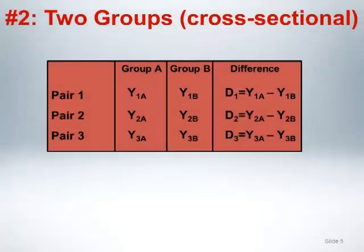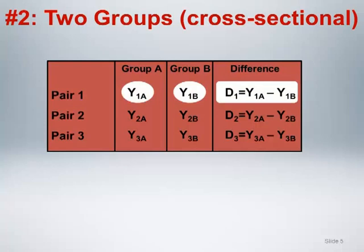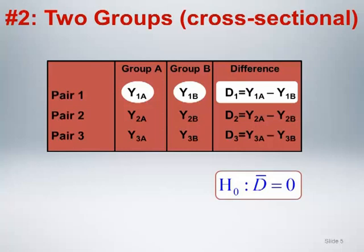In the second scenario, there are two groups of subjects with an outcome measured at a single point in time. As in the first scenario, the figure illustrates the data structure for the first three pairs of subjects. Subjects in each group are enrolled as pairs so that within each pair, one subject is randomized to group A and the other to group B. The goal of the pairing is to ensure that each pair has a similar value of the pairing variable in order to reduce the potential impact of that variable on the outcome. The primary inferential interest is the within-pair difference, and the null hypothesis is that the mean difference is zero, indicating no difference between the groups.